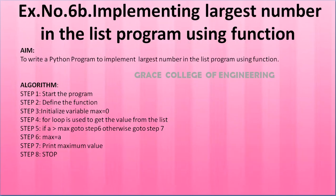Let us see the lab exercise. Exercise number 6b: Implementing Largest Number in the List Program using Function. Aim: to write a Python program to implement the largest number in the list using function. Algorithm — Step 1: Start the program. Step 2: Define the function. Step 3: Initialize variable max = 0. Step 4: Use a for loop to get values from the list. Step 5: If a is greater than max, go to Step 6; otherwise go to Step 7. Step 6: max = a. Step 7: Print maximum value. Step 8: Stop the program.